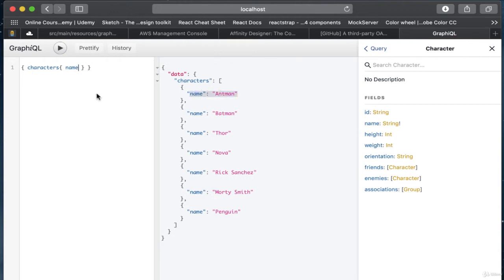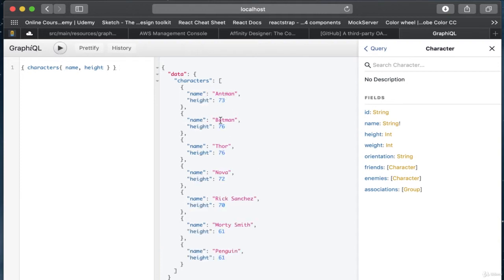Now, if we wanted to change this, it's just as simple as saying, let's say we want to ask for height as well. We execute the query again, and now we can see that it returns that information. This is really a really good tool to use when you are developing, especially when you're developing your services, because it gives you a chance to interact directly with the service the way it's defined in the schemas.